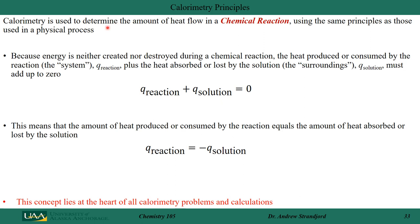We use calorimeters all the time to measure heat flow in chemical reactions, using the same principles as for physical processes. Because energy is neither created nor destroyed in a chemical reaction, heat produced or consumed by the chemical reaction — Q_reaction — plus the heat absorbed or lost by the solution — Q_solution — must equal zero. Rearranging, Q_reaction = −Q_solution. This concept of heat lost and heat gained is at the heart of all calorimetry problems and calculations.